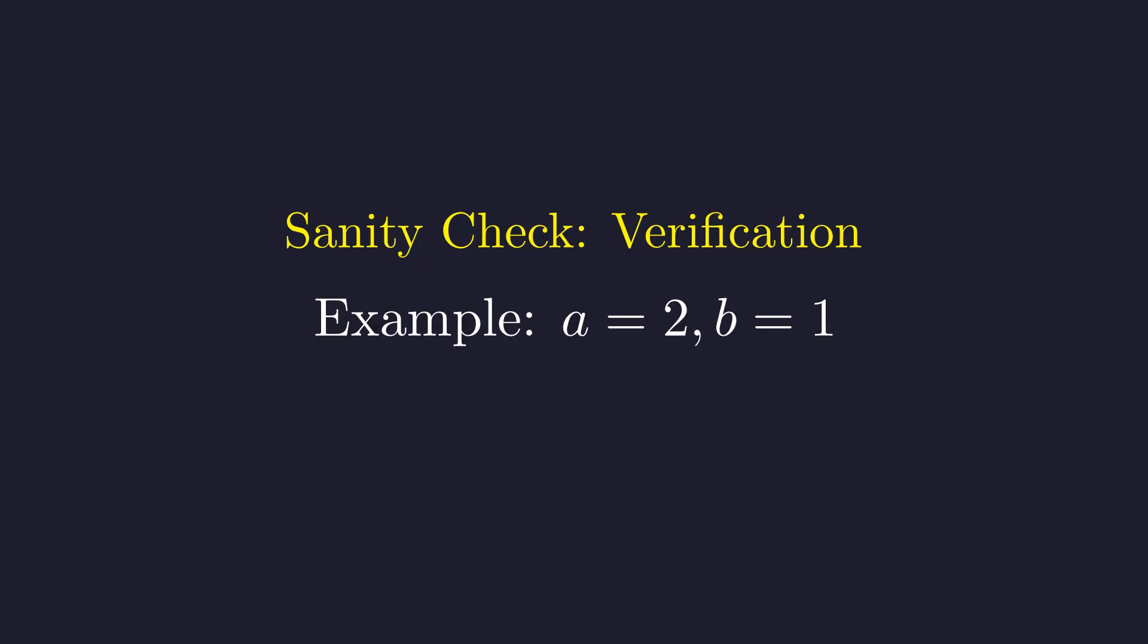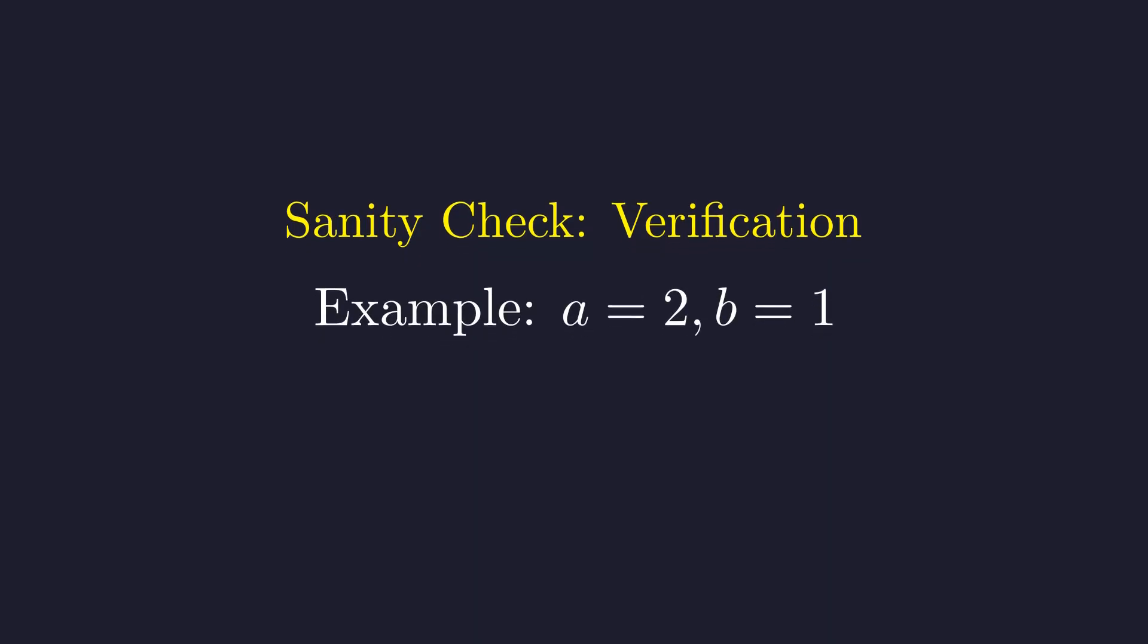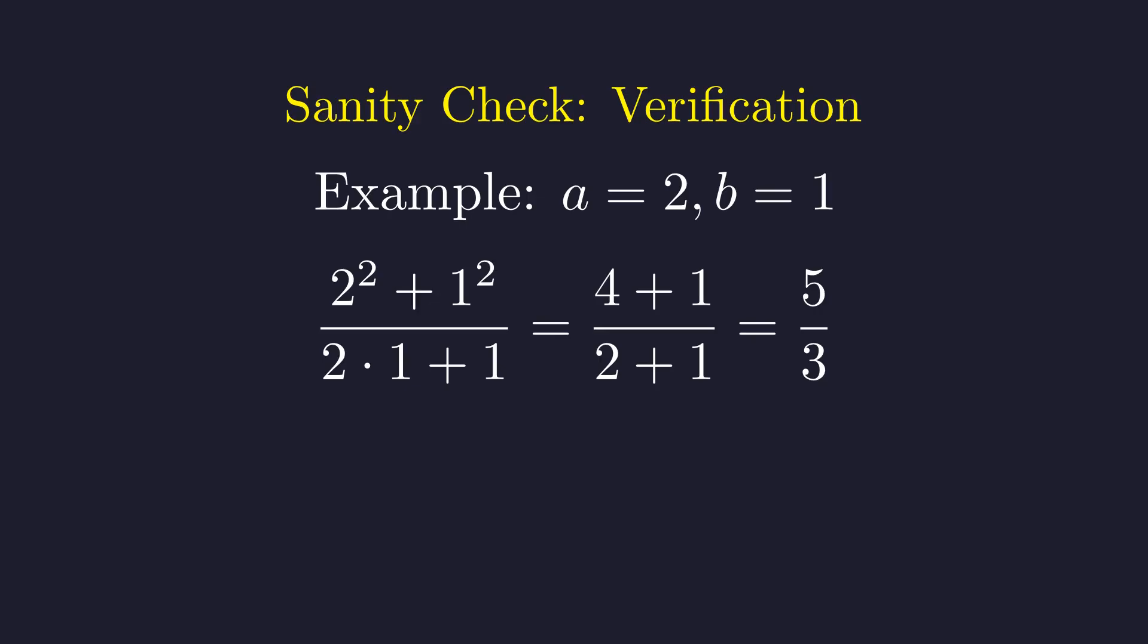Let's verify our result with concrete examples to make sure our abstract proof holds in practice. Let's try a equals 2 and b equals 1. This gives us 4 plus 1 divided by 2 plus 1, which equals 5 thirds. This is not an integer, which is consistent with our theorem. The expression doesn't always yield an integer.